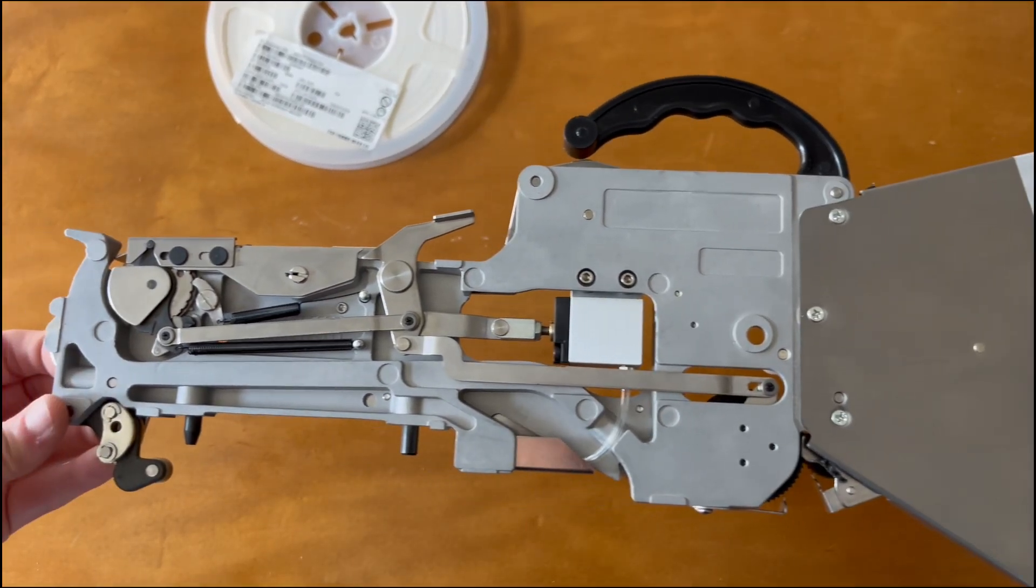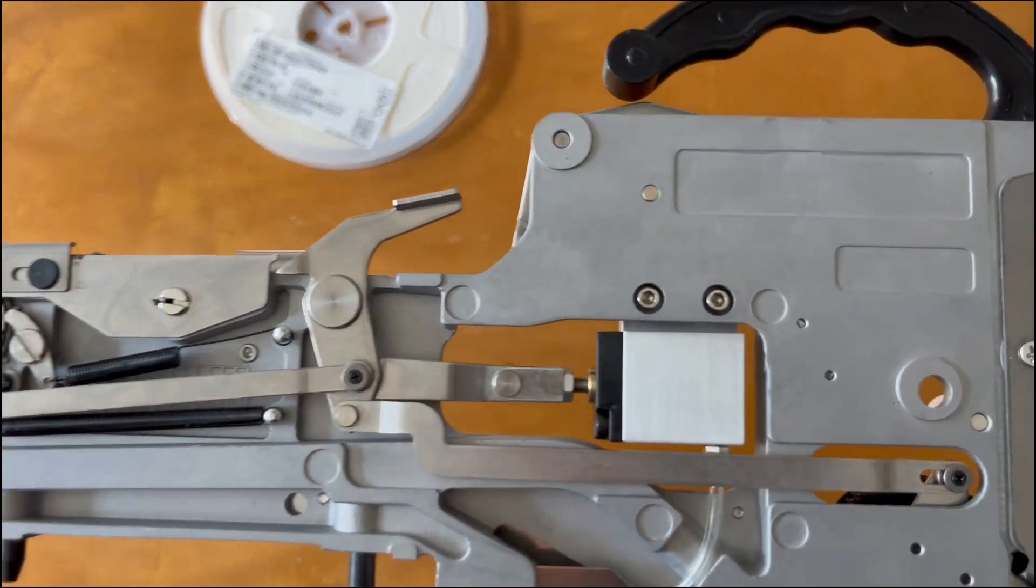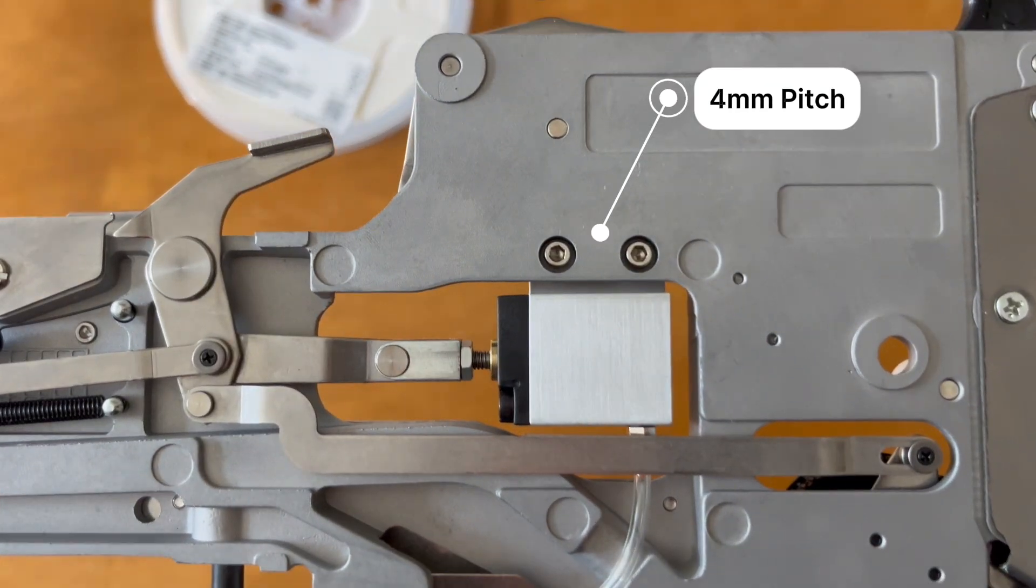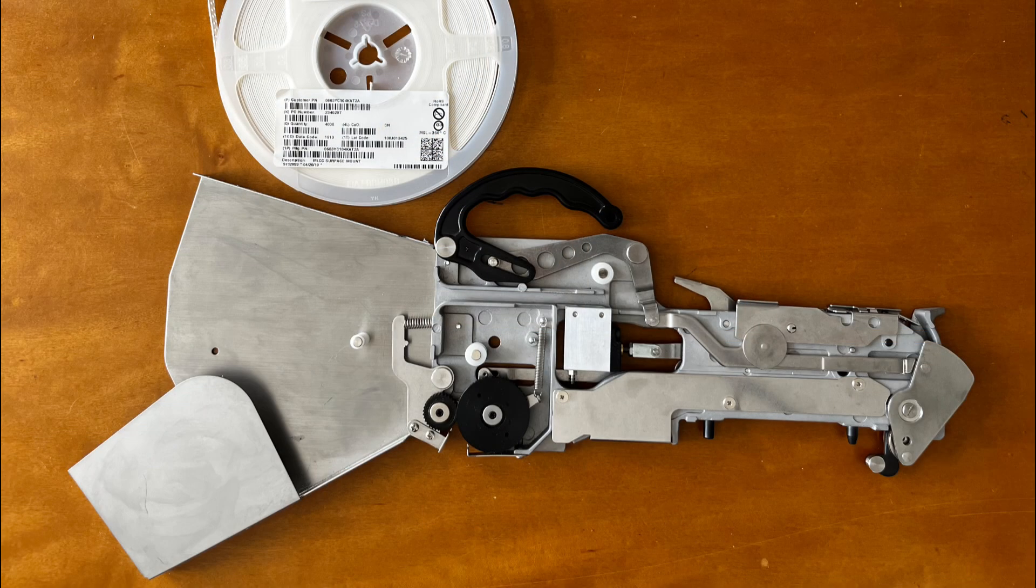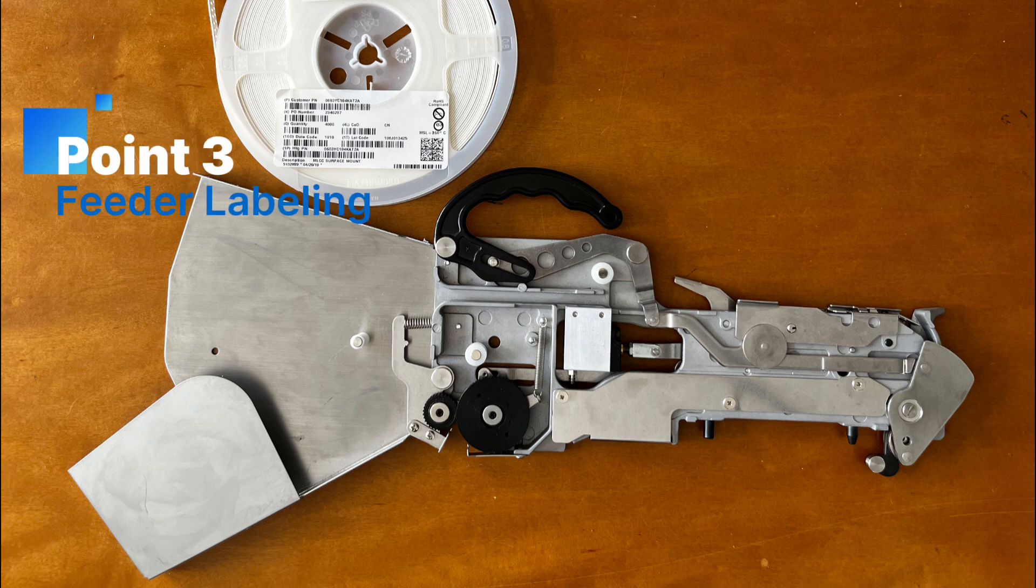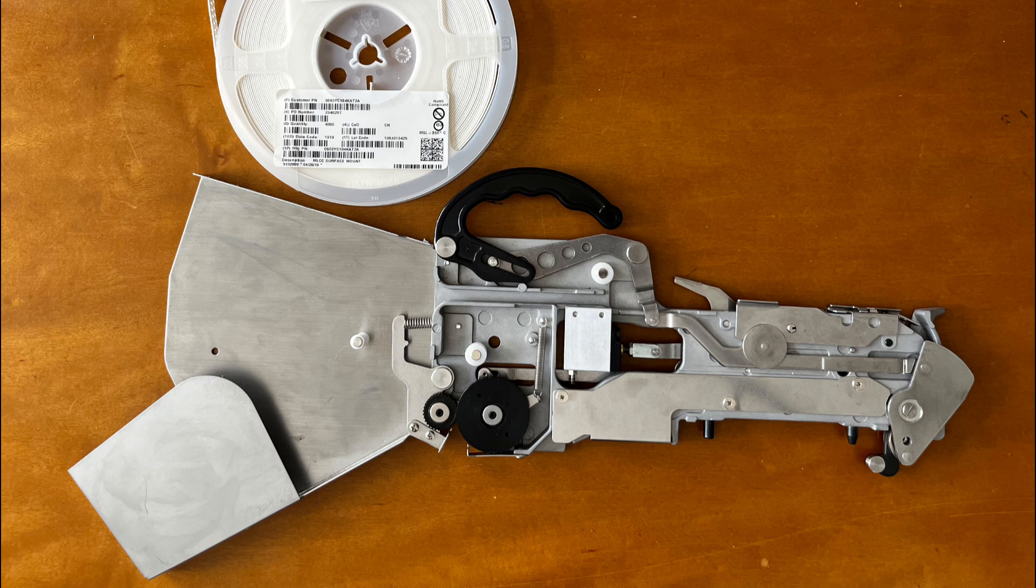For an 8mm feeder, like the one we're using in this video, the pitch is usually fixed at 4mm, so we don't have to make any changes. However, larger feeders generally require adjustment. Finally, be sure to label each feeder with the component's footprint and value after installation to help keep your assembly process organized.